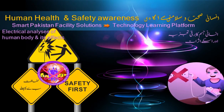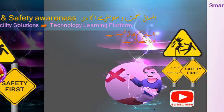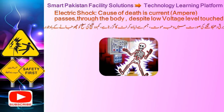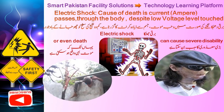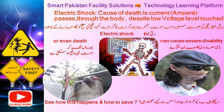Smart Pakistan Facility Solutions is introducing a Human Health and Safety Awareness series of videos. This video is about electrical analysis of the human body and its impact. In case of electric shock, the cause of death is current passing through the body despite low-level voltage touched. This shock can cause severe disability or even death. Let's see how this happens and how to save ourselves.